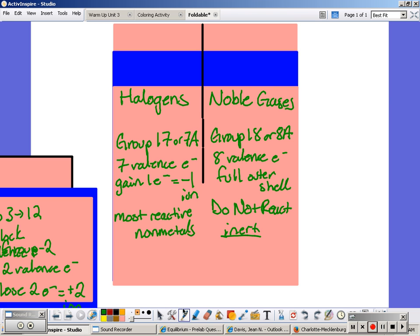Moving to the second to last page, you want to title it post-transition metal. Draw your line straight down and on the other side label it active metal.